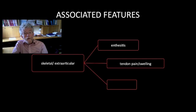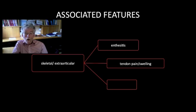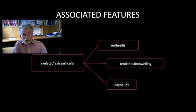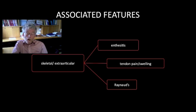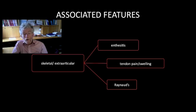Tendon pain, tendon swelling, and tendon sheath involvement can give pain, swelling, and stiffness at the wrist, around the ankle, and at other sites. Also included in this part of the framework is Raynaud's phenomenon, which I use here as an extra-articular feature that can occur in certain connective tissue diseases.